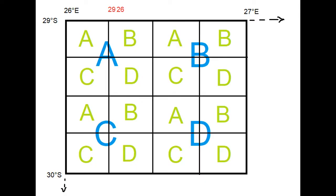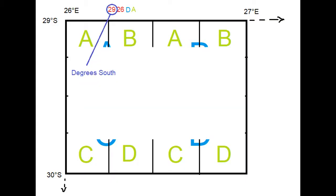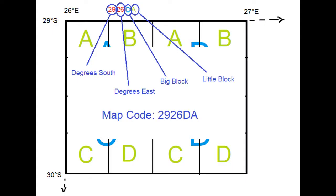So now we have our 16 blocks, and this is the block that I'm going to look for my map code. We know it is 2926, big block is D, and the little block that it fits into is A. So let's break down the map code: 29 is our degrees south, 26 is our degrees east, the D is the big block, and the A will be the little block. So our map code is 2926DA.